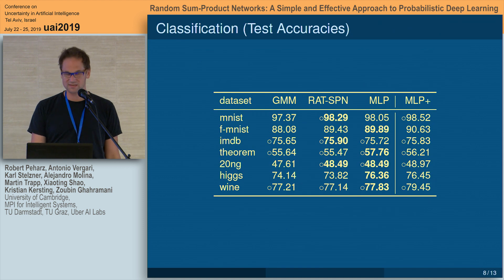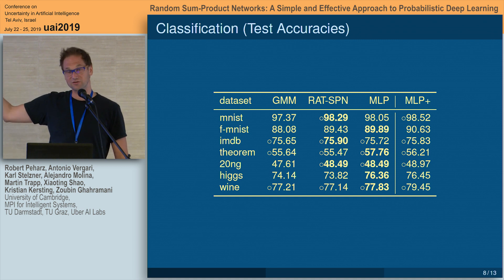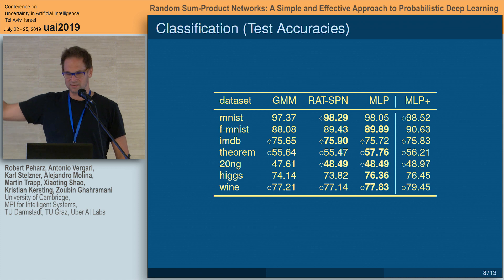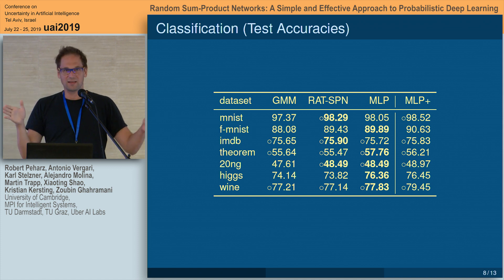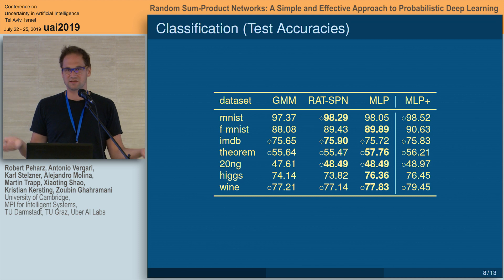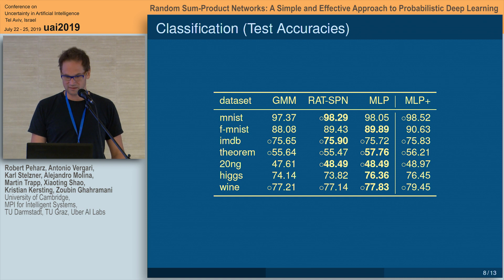We also trained RAD SPNs as classifiers using cross-entropy or our hybrid objective. The main comparison is with multilayer perceptrons. We see that you can classify MNIST and other datasets with RAD SPNs — they perform essentially on par with MLPs. They are data-agnostic models that can be trained as classifiers.